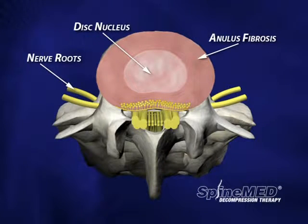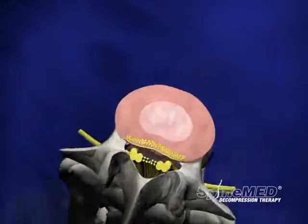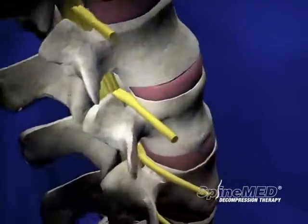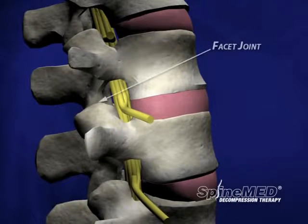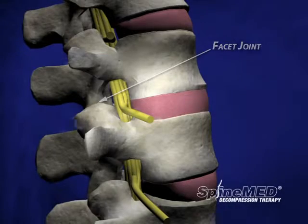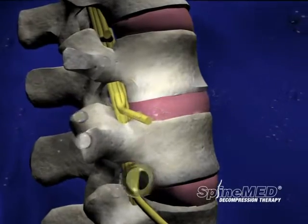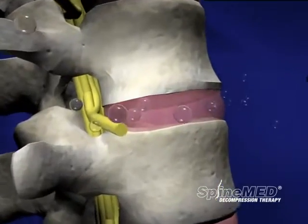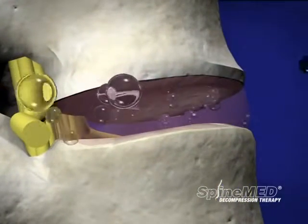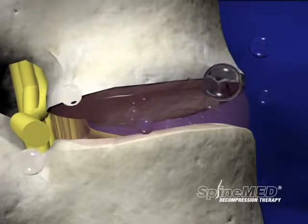The spinal nerve roots, seen here in yellow, are extensions of the brain and spinal cord. The facet joints are located just behind the spinal nerve roots — it is at these joints that the vertebrae make contact as they are stacked upon one another. The disc relies on the transfer of fluids and nutrients from the vertebrae above and below, as well as the outer layer of the annulus, to stay healthy.